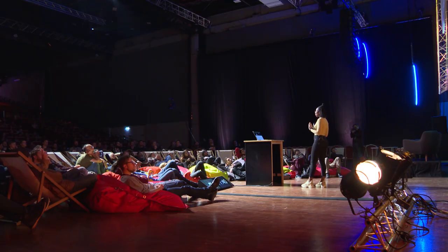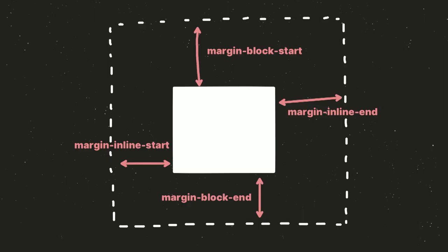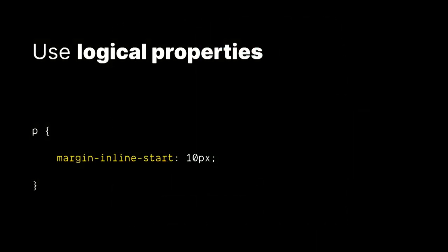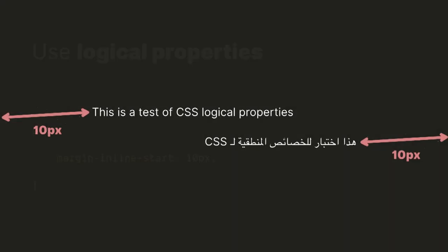Logical properties represent a change to the way that we view the box model. Instead of thinking of things like vertical and horizontal, we think of them as the block and the inline, and that changes depending on what language or direction the web page is written in. So we would do something like margin-inline-start, and then depending on what language, it's going to apply it to the left or right or top or bottom — wherever the start of the inline actually is.